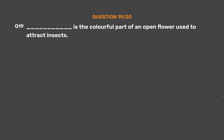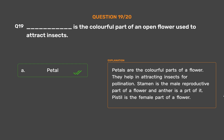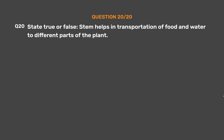Question 19: ___ is the colorful part of an open flower used to attract insects. Option A: Petal, Option B: Stamen, Option C: Pistil, Option D: Anther. The correct answer is Option A, Petal. Petals are the colorful parts of a flower; they help in attracting insects for pollination. Stamen is the male reproductive part of a flower and anther is a part of it. Pistil is the female part of a flower.